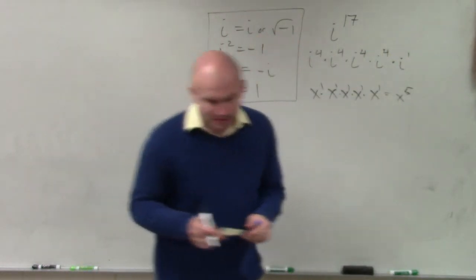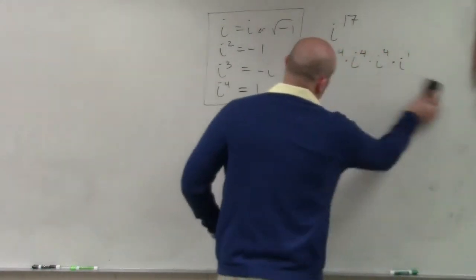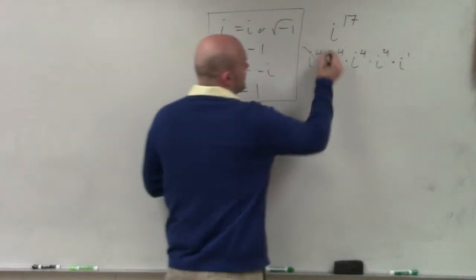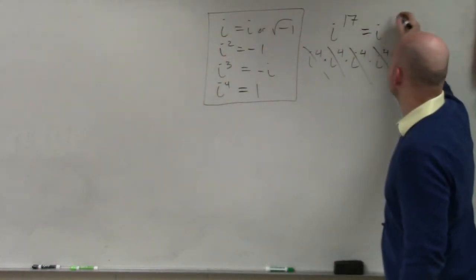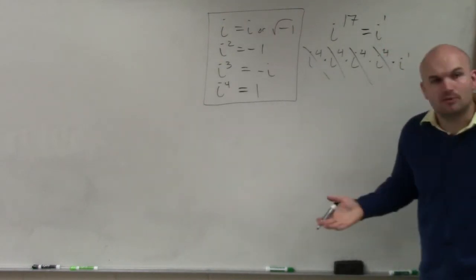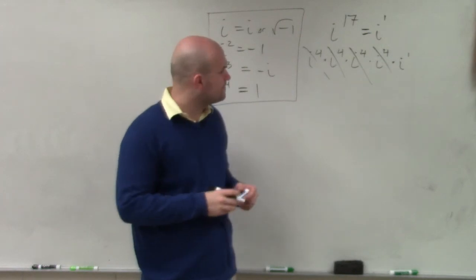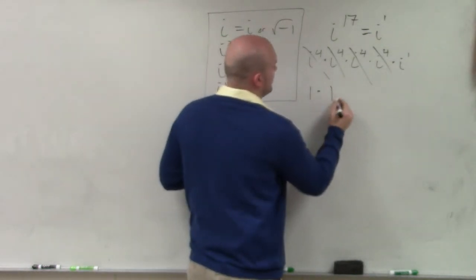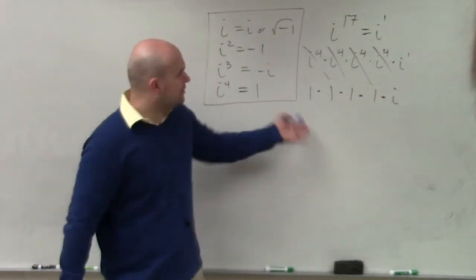So do you guys agree that i to the 17th is the same thing as i to the 4th and all those times? Now, the reason why I did it like that is because what I want you guys to understand — what is i to the 4th? 1. So those, we really don't need to write this up. We can say i to the 17th is the same thing as i to the 1st power. Because i to the 4th equals 1, that's 1 times 1 times 1 times 1 times i. So really, it's just equal to i.